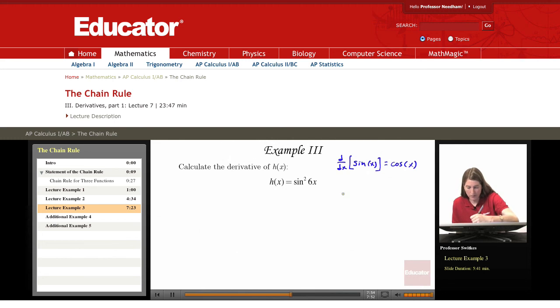So for the outer function, the outer structure here is f(u) = u².